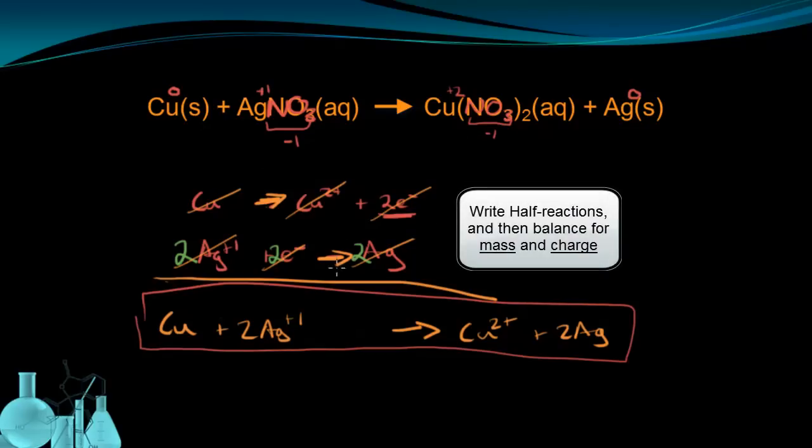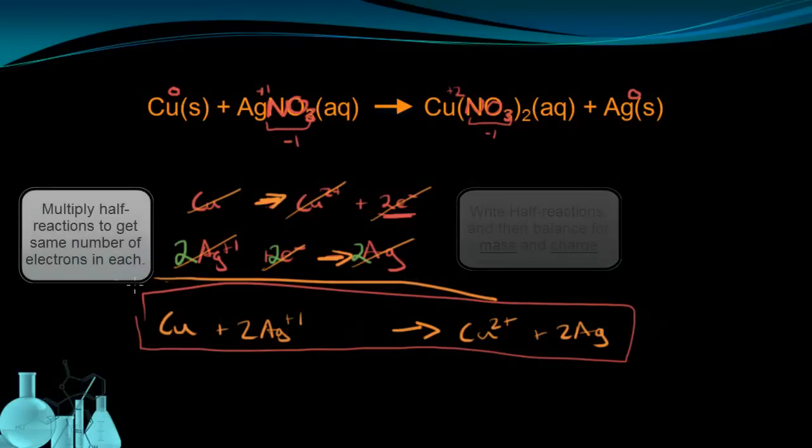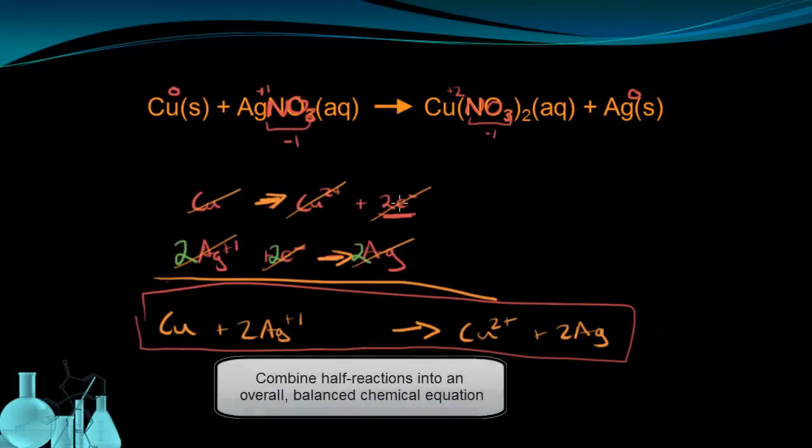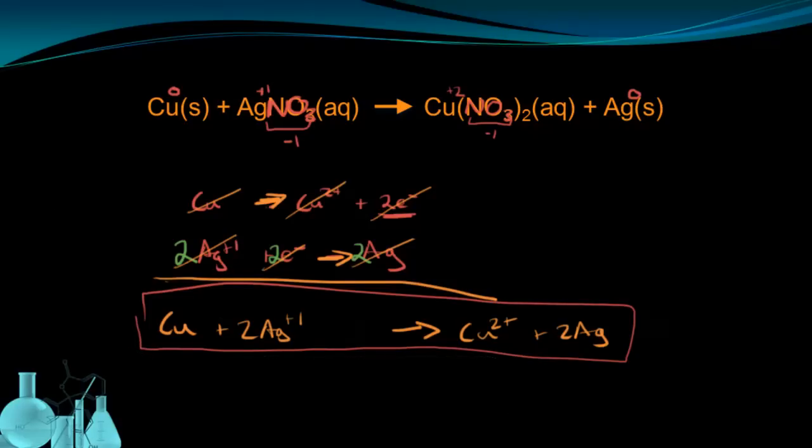Once I had the half reactions, I made sure they were balanced for mass and charge. I added coefficients to make sure that the electrons were the same in each half reaction. Once the electrons were the same in each half reaction, I then combined them together to make the complete balanced equation. So as I said, this is a fairly simple example. Let's now look at an example that takes advantage of balancing by half reactions and when it's actually necessary.